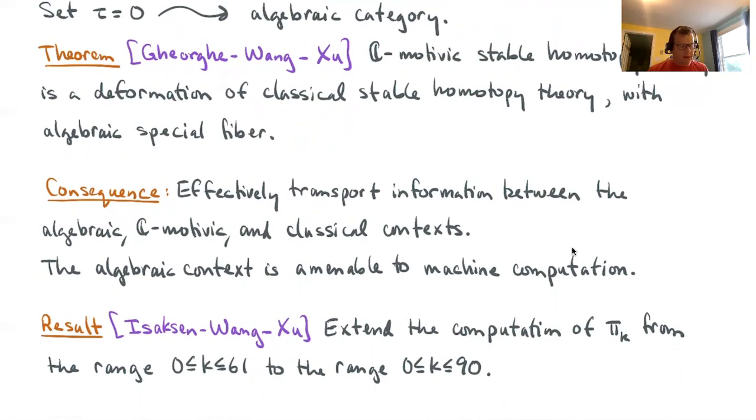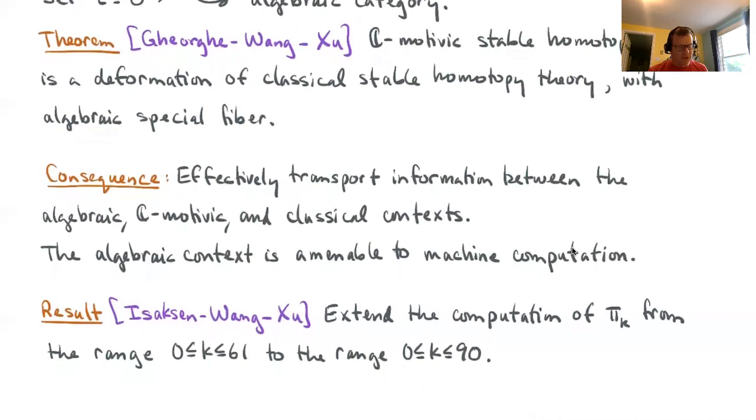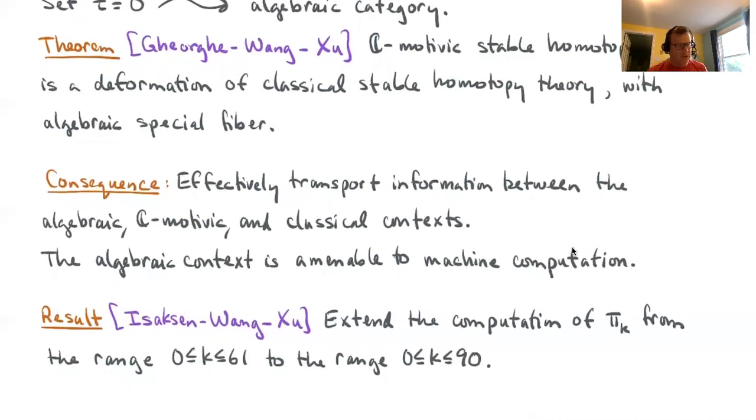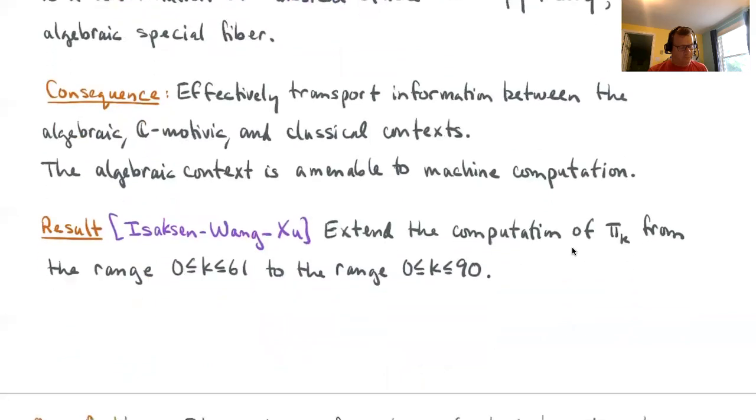The result of a large project of myself and Wong and Xu is that we have extended the computation of the stable homotopy groups from the previously known range of 0 to 61 out to a much larger range from 0 to 90. As these stable homotopy group computations go, this is a pretty big breakthrough. This is a lot of new information, all due to this deformation perspective and especially these machine computations in the algebraic context.